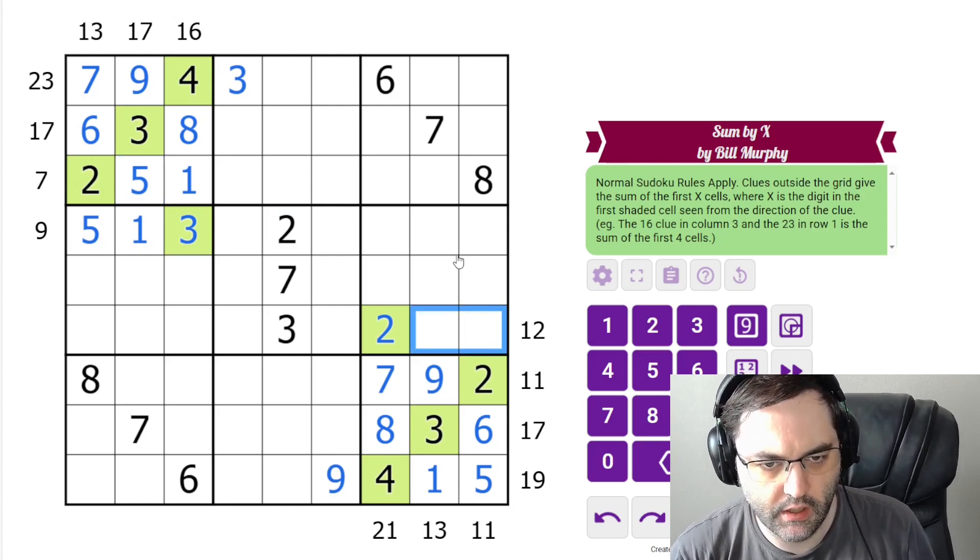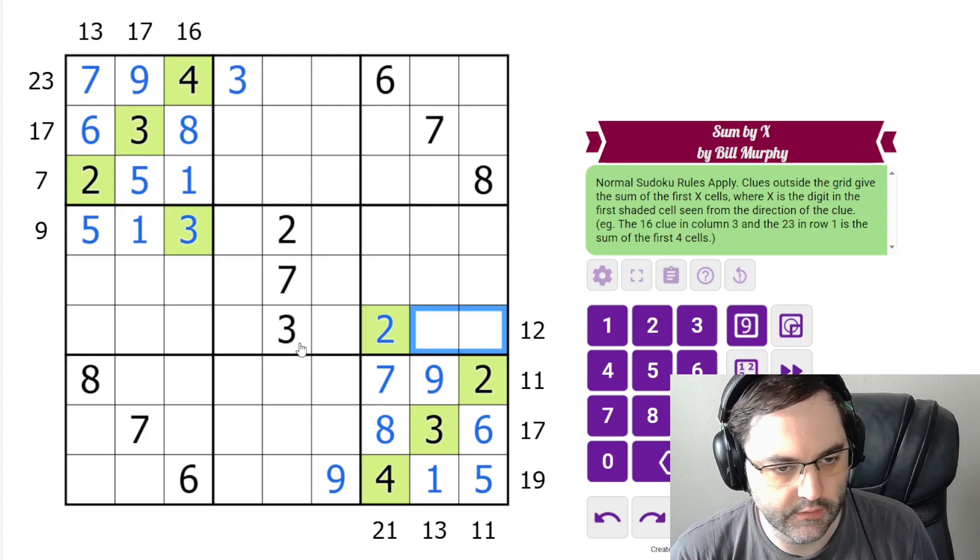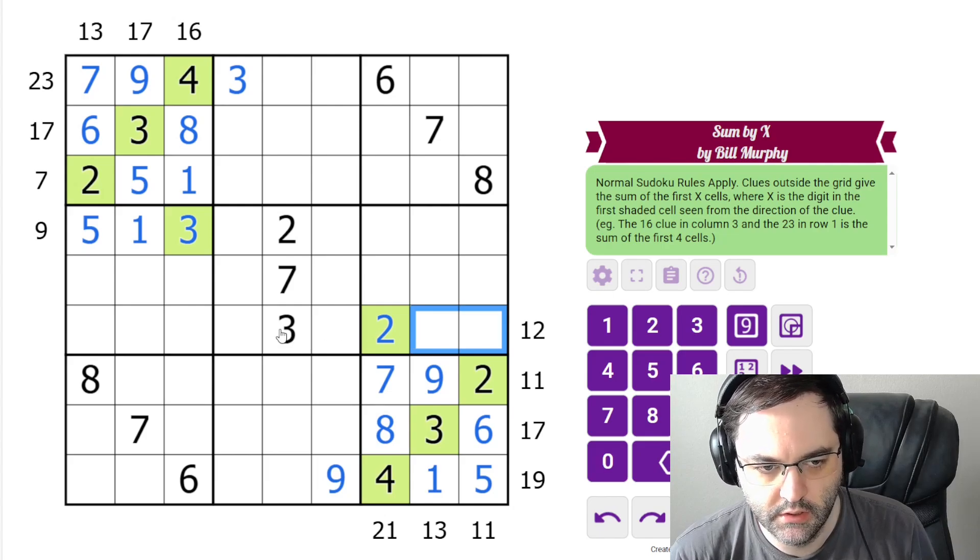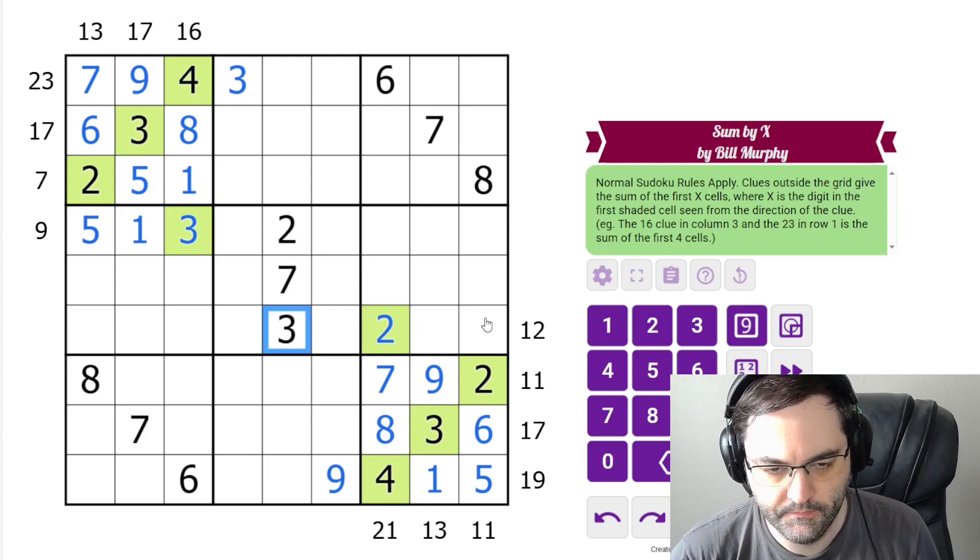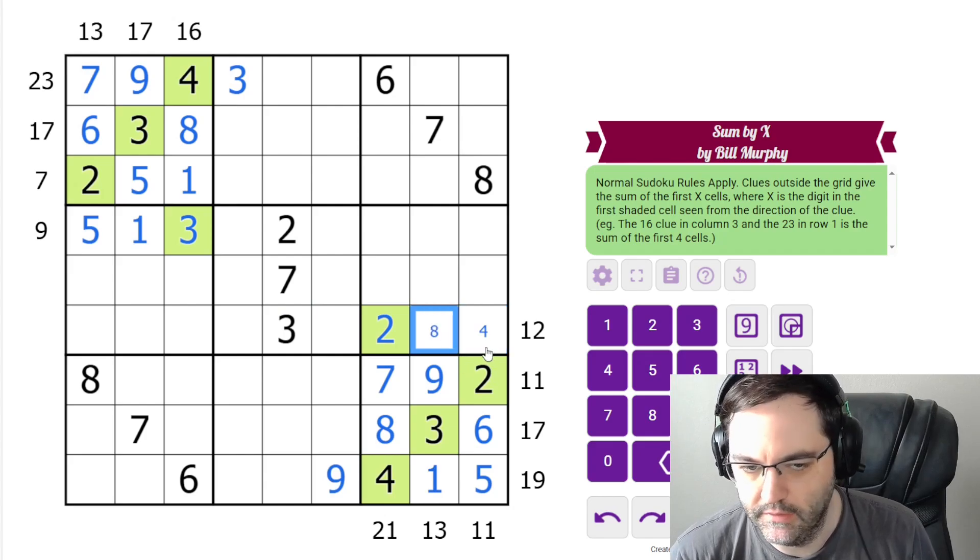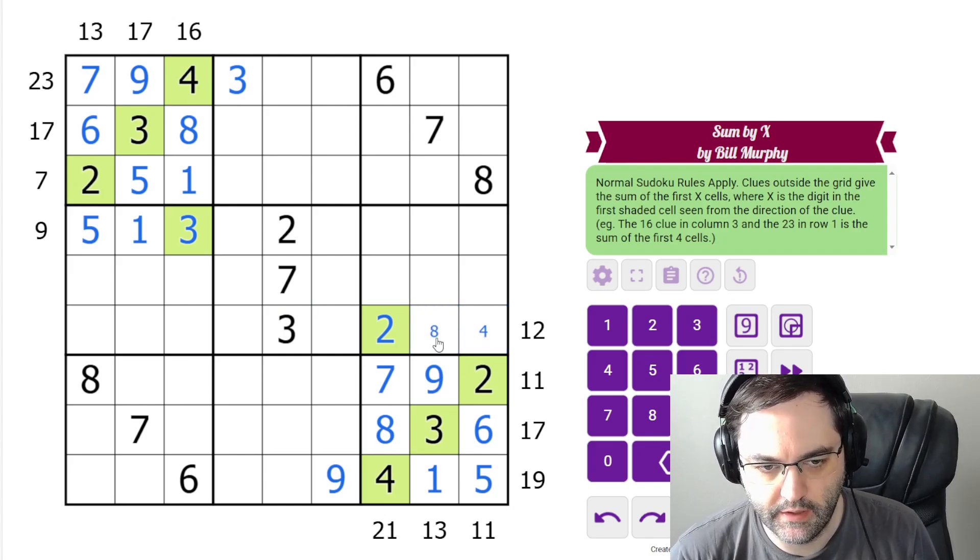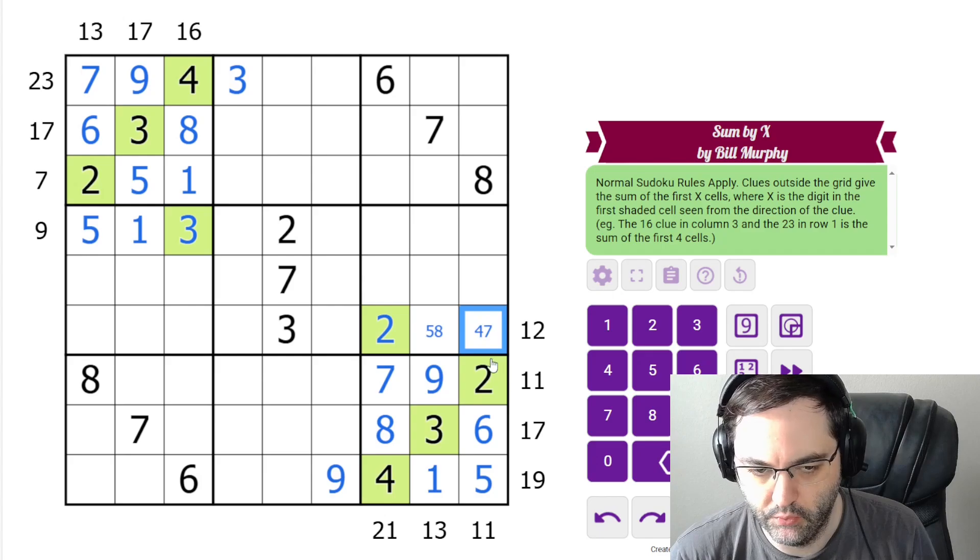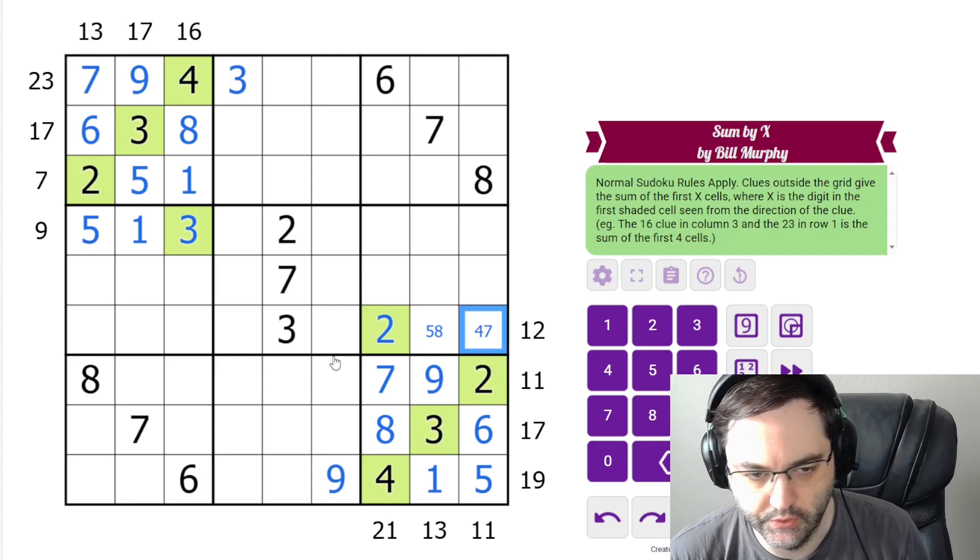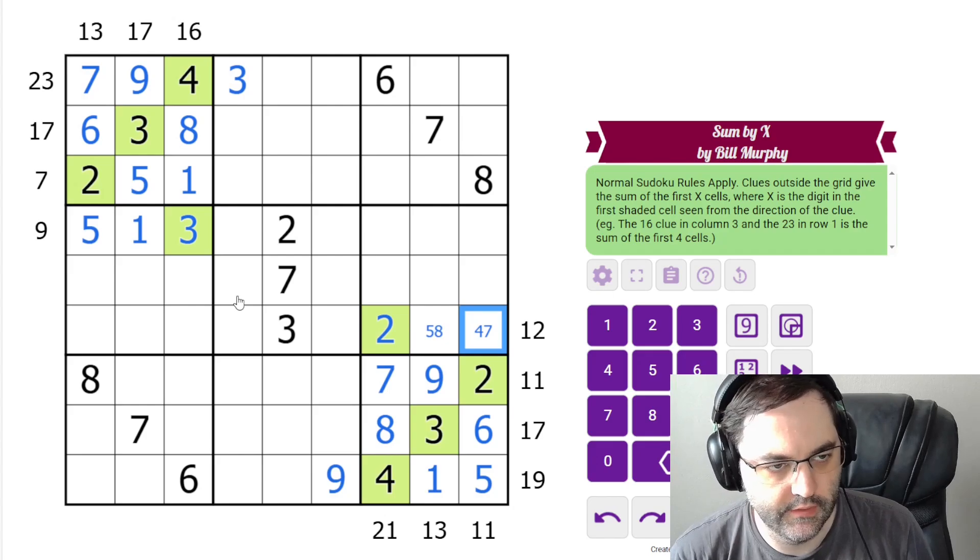This 12 clue, I don't know if it's resolved yet. Let's check. It can't be 3, 9. If it were 4, 8, it would need to be in this order. If it were 5, 7, it would need to be in that order. And those are the only options. So we're left with two possibilities there.